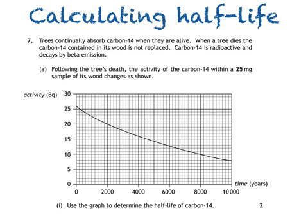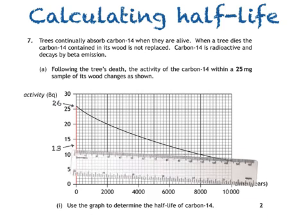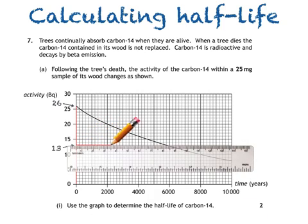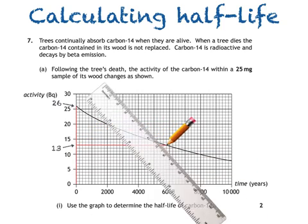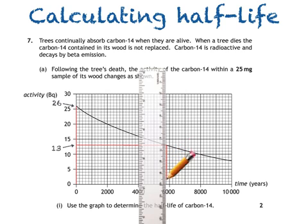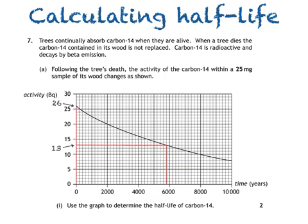We'll determine the time for the source's activity to decrease from its initial value of 26 becquerels to half that value, 13 becquerels. The activity of the source is 26 becquerels at time zero. If it's okay to write on the question paper, we can then draw along from 13 becquerels until we meet the line, and then all the way down to find the time taken for the activity to half. This green arrow represents the half-life of the source.